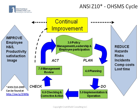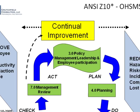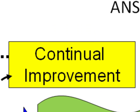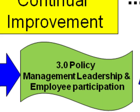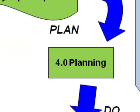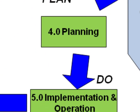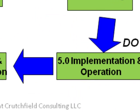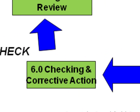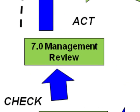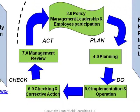The Z10 process is a cycle of continual improvement. It begins with the establishment of policy, planning, implementation and operation, checking and corrective action, and management review. It's a plan, do, check, act cycle.